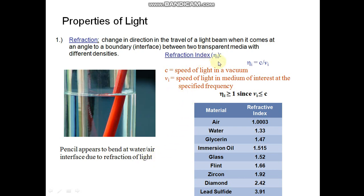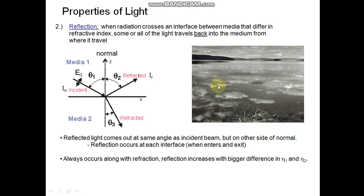Refractive index eta is equal to c upon v. C is the speed of light in vacuum, v is the speed of light in medium of interest at the specified frequency. Value of eta is always greater than or equal to 1 since v is less than or equal to c.